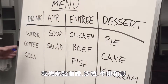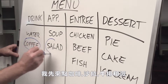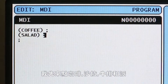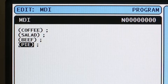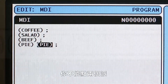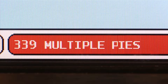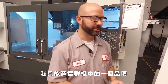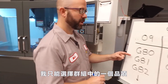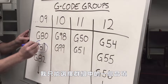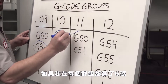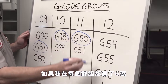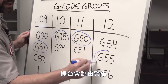For example, I'm going to get the coffee, a salad, the beef, and pie — but you cannot have two pieces of pie. When writing a CNC program, I can choose at most one G-code from each group. If I try to select more than one G-code from the same group, I'm going to get an alarm.